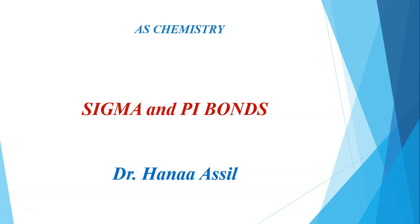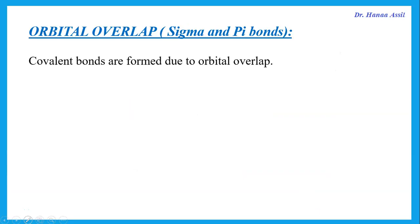Hello, this is Dr. Hanna Asil, and this is about sigma and pi bonds. These are due to overlap of orbitals when covalent bonds are being formed.